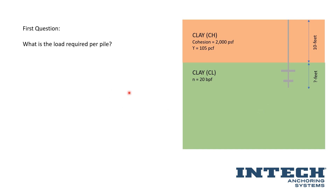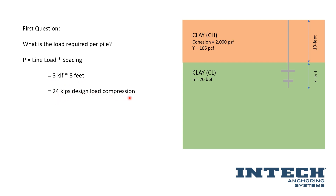The first question is: what is the load required per pile? The load per pile is going to be our line load times our on-center spacing. So we have 3 kips per linear foot times 8 feet spacing, which equals 24 kips design load compression. If we found that we can never find capacity for this 24 kips design load compression, we might need to tighten that spacing up a little bit and reduce the load per pile. For now, we're going to go with this 24 kips design load compression per pile.